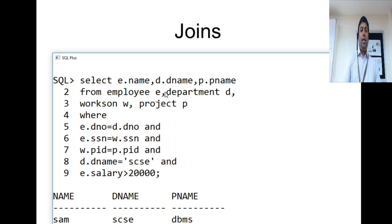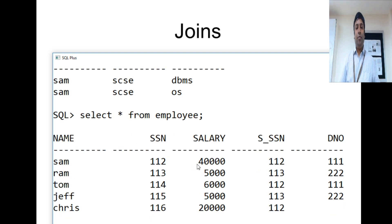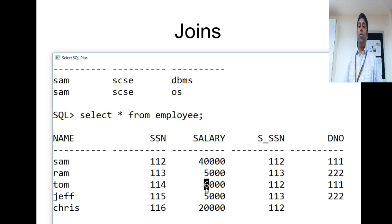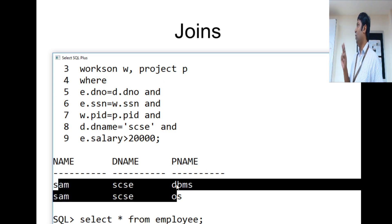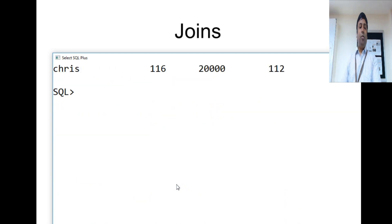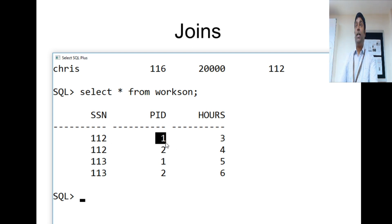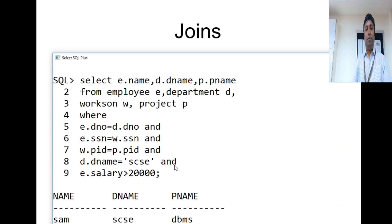Checking the results: from SELECT * FROM employee, Sam is the person with salary greater than 20000, while another employee working for SCSE has a salary of only 6000 and is filtered out. Sam's record appears twice in the output because he is working on two projects — confirmed by SELECT * FROM works_on, where employee 112 (Sam) appears for both project ID 1 and project ID 2. The query is correct.